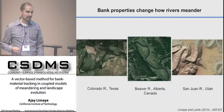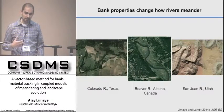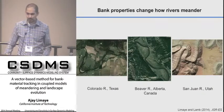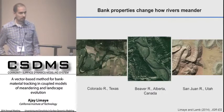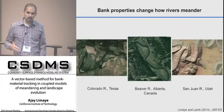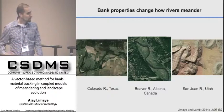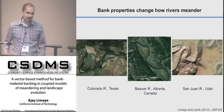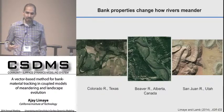To understand meandering and its evolution and its impacts in the landscape, we need to understand how meanders interact with bank properties. Taking a quick tour of different river valleys across North America — the Colorado River in Texas and the San Juan River in Utah, even though in very different environments, share the characteristic that the channel has a gently varying sinuosity across the landscape.